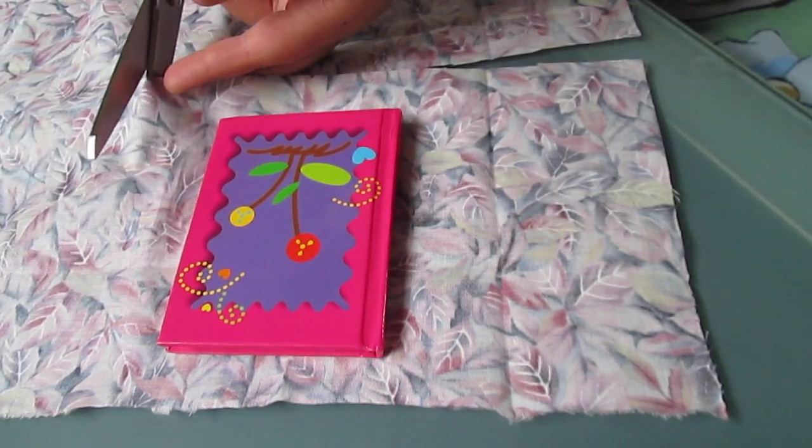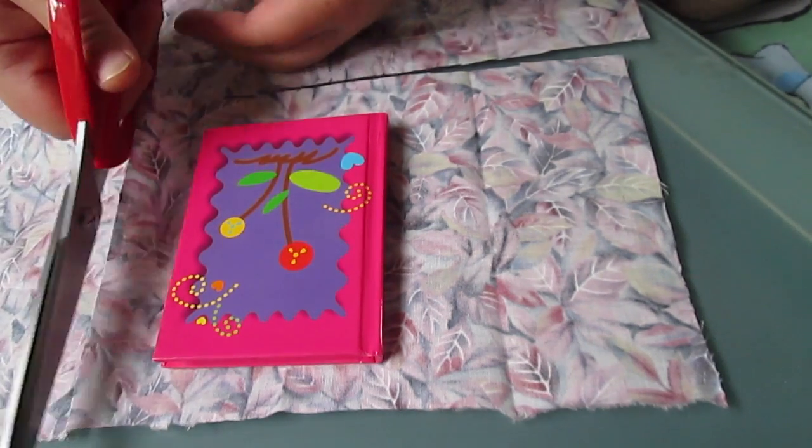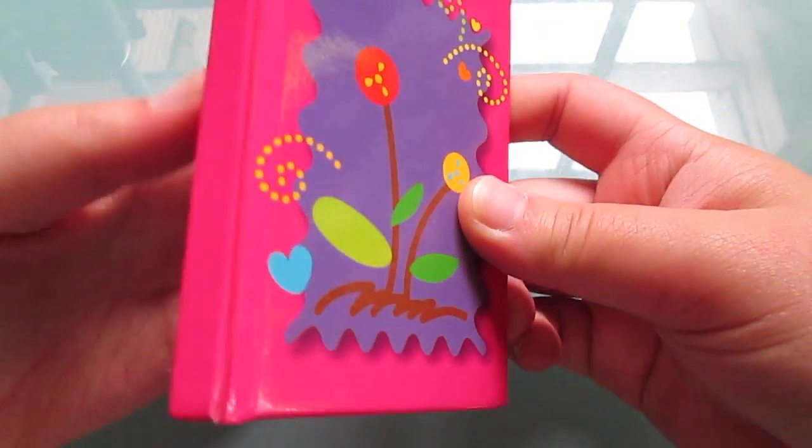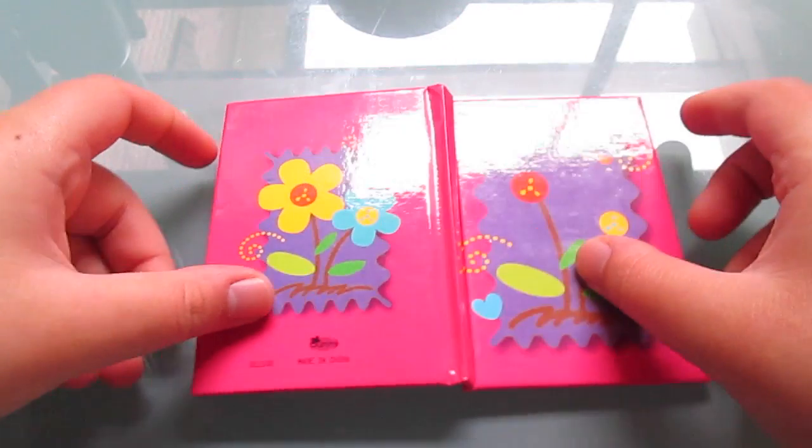Taking your fabric scissors, cut out your cotton fabric. Once you have something that looks kind of like this, the next step is to grab our fabric Mod Podge, and this is where the fun begins.